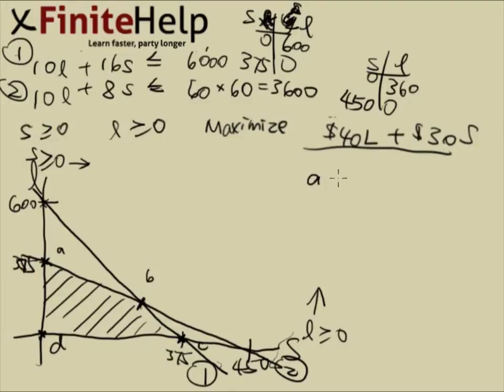Point A is obvious. The S coordinate is going to be 0, and the L coordinate is 375. Point B is not so obvious, we have to calculate it. Point C again is obvious, this is going to be 375 and 0. This should actually be 360. It's 360 and 0 for this point. So this is 360. Not that it will change the answer. And then finally, point D is 0 and 0.